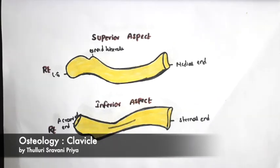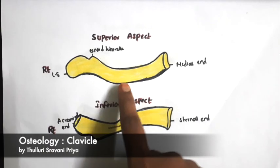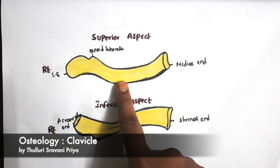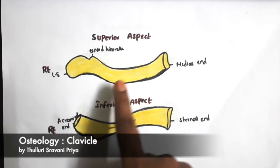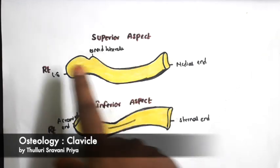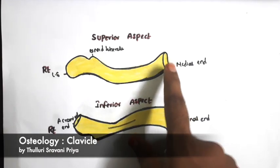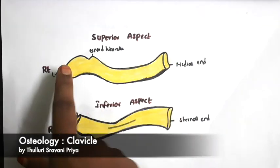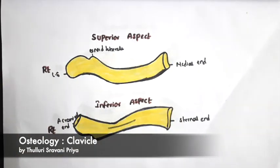Hi friends, today we will discuss about the clavicle. The clavicle is a long bone having a cylindrical shaft with two ends: medial end and lateral end. This is the bone which transmits the weight of the upper limb to the sternum.